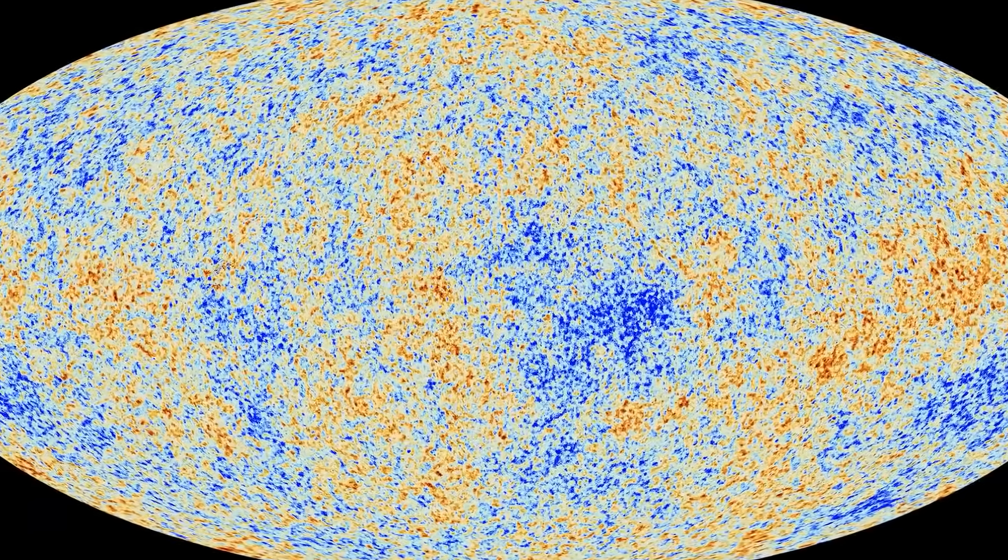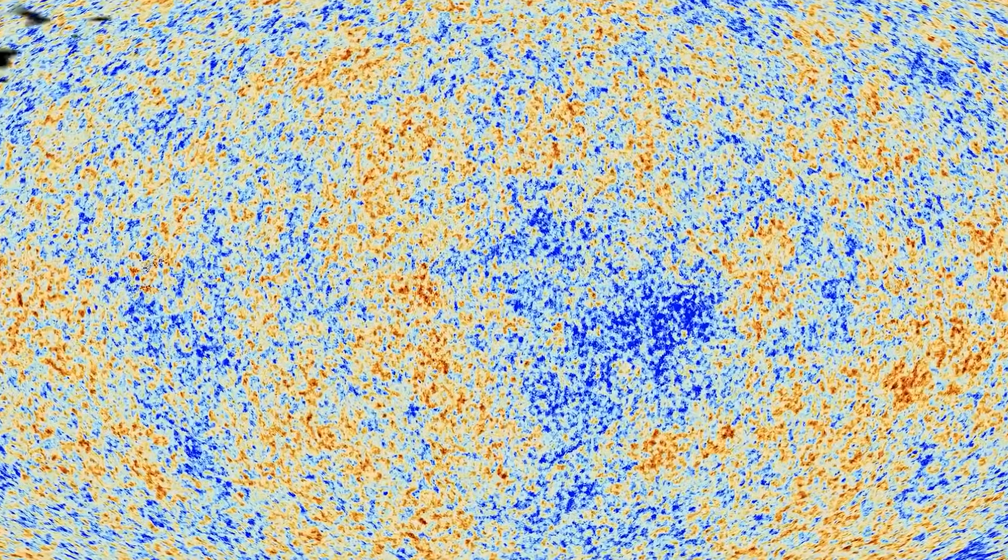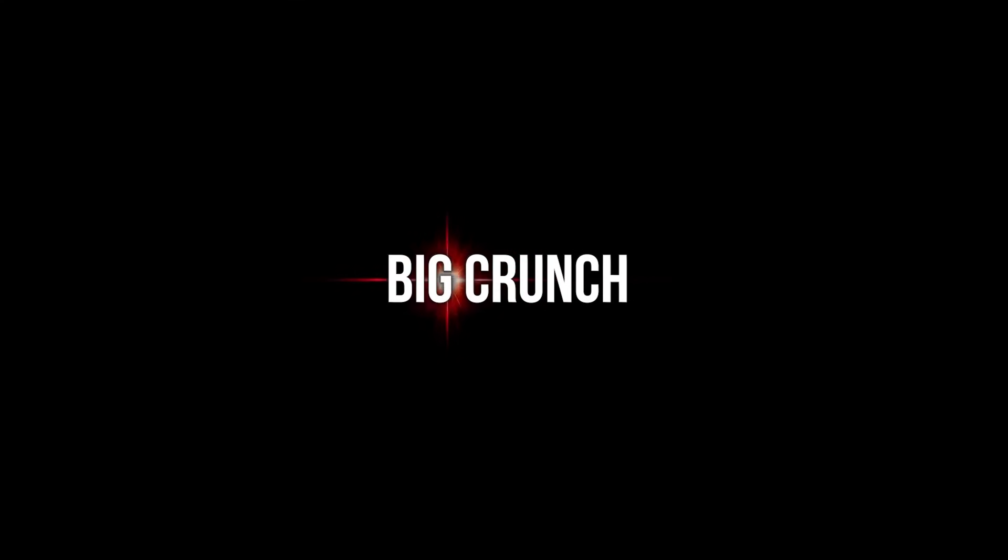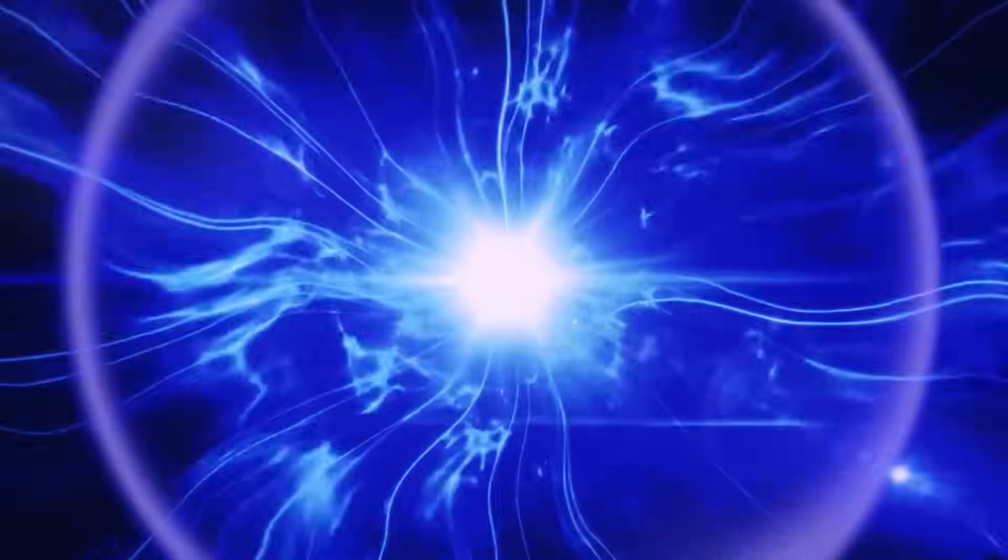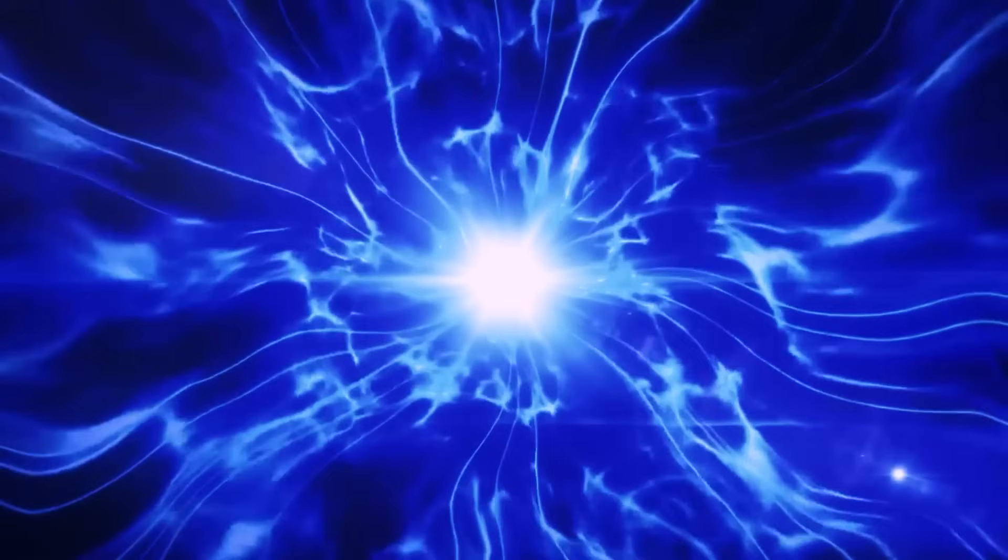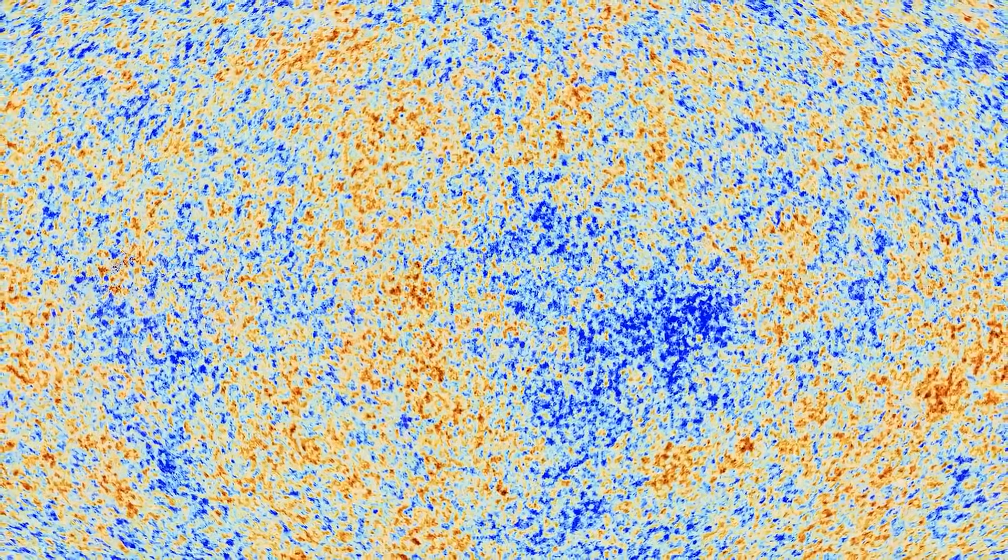The third way that our universe might come to an end is known as the Big Crunch, and it's seen as a direct consequence of the Big Bang. In this scenario, the universe doesn't keep expanding forever. Instead, after a considerable amount of time, possibly trillions of years, if the average density of the universe is sufficient to halt its expansion, the universe would initiate a process of collapsing inward.